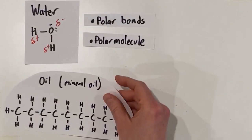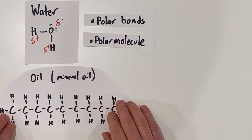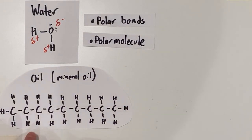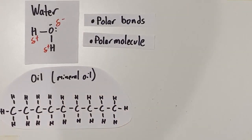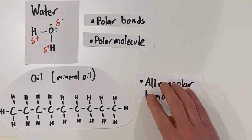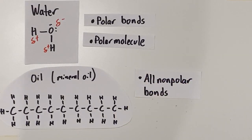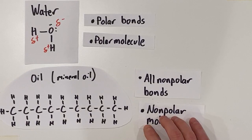What about oil? If we look at the structure for an oil, like mineral oil here, we'll see that all bonds we have are either carbon-carbon bonds or carbon-hydrogen bonds. And both these bonds are nonpolar. Carbon and hydrogen have very similar electronegativity values. And if we only have nonpolar bonds, then we're going to end up with a nonpolar molecule.